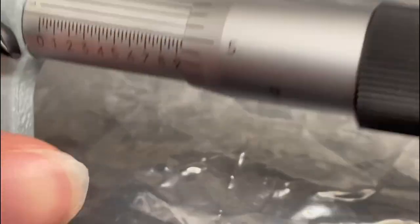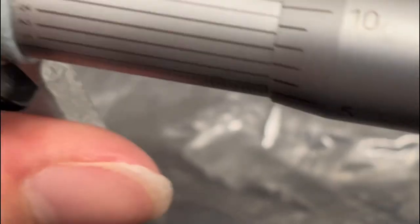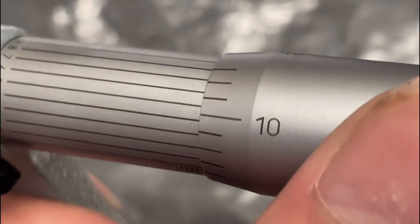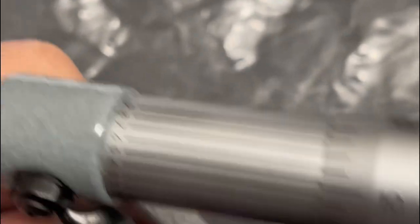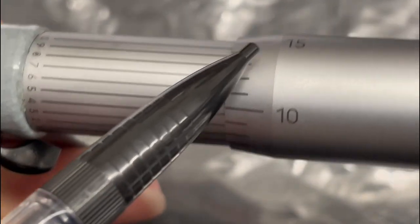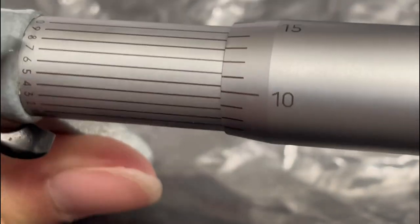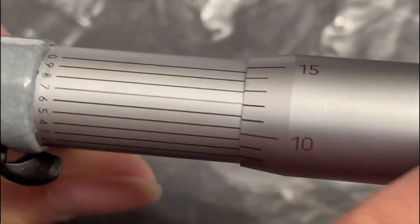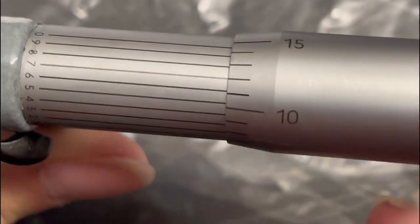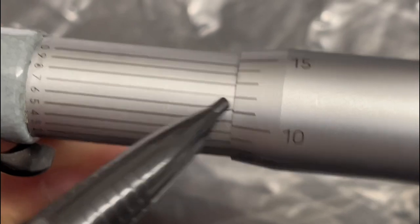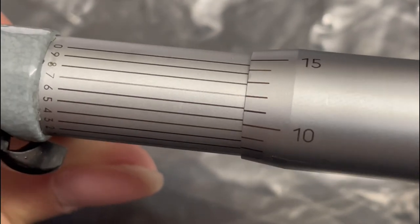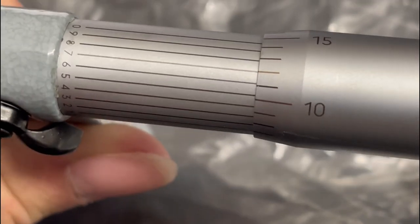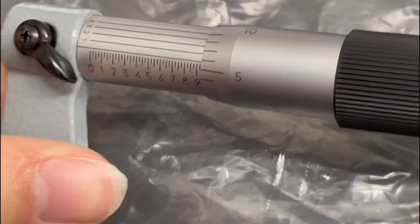And lastly on this sleeve we have one to nine increments. On the one to nine, let's say you get a successful measurement. Whatever line corresponds the best with the thimble will be your ten-thousandths place. So let's say the seven is the best lined up. You add or tack on to your number seven ten-thousandths.